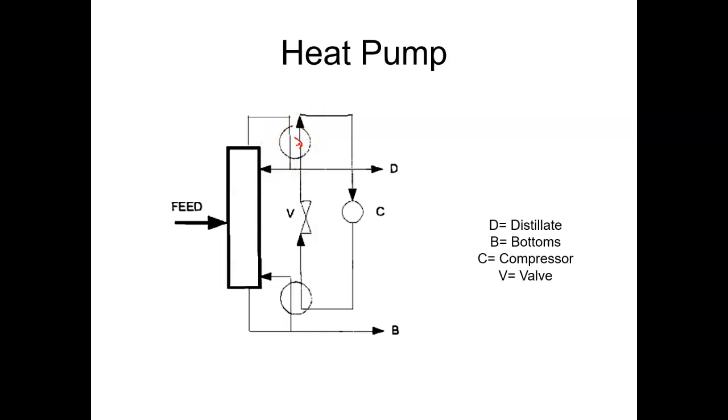This external fluid receives the energy from the vapors which are coming from the top, that fluid gets compressed and thereby the temperature of the fluid gets increased and then the same fluid exchanges energy with the bottom of the liquid, then it is being throttled to further reduce the temperature and then it comes back to the condenser. This cycle continues.